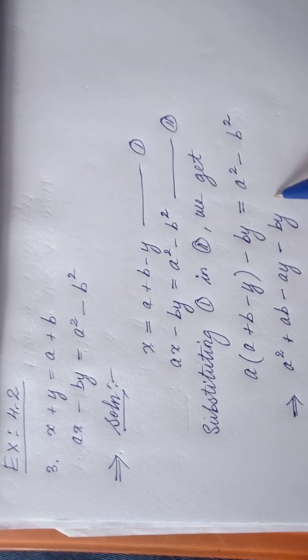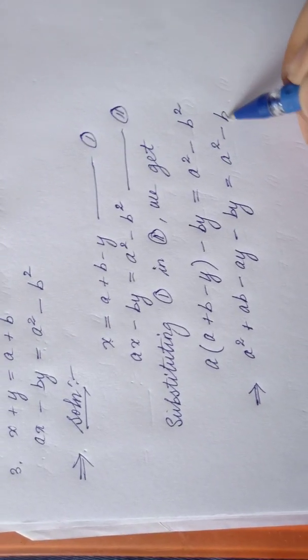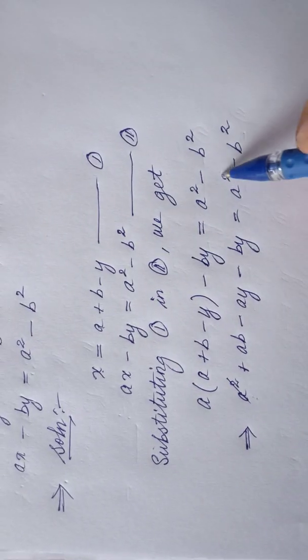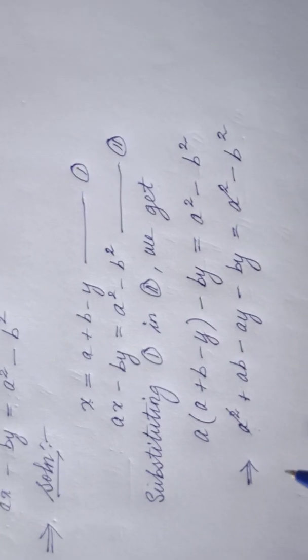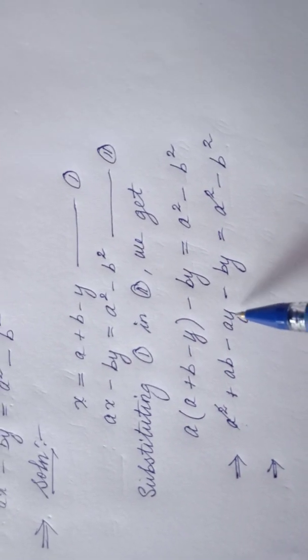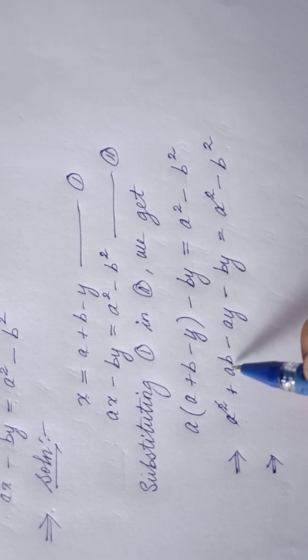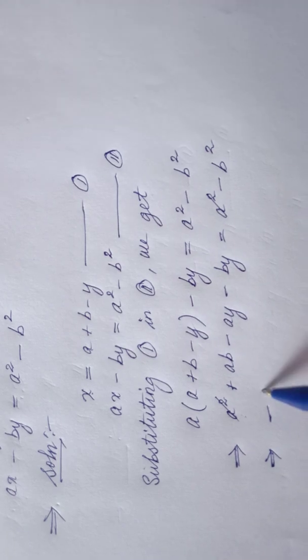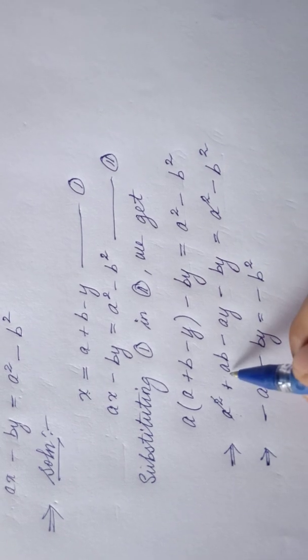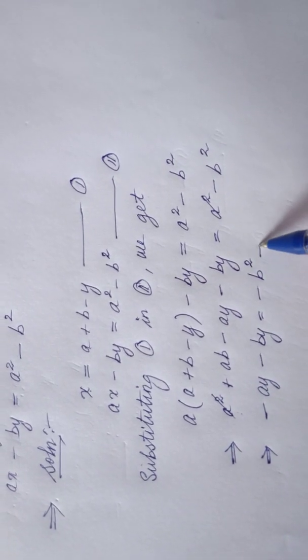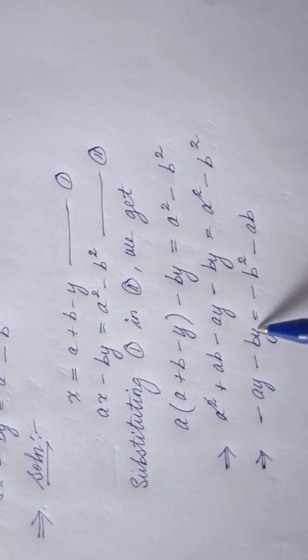Expanding: a into a is a squared, plus a into b is ab, minus ay, minus by, equal to a squared minus b squared. As you can see, we have a squared on the left-hand side and a squared on the right-hand side, so these two cancel each other. Moving the ay and by terms, we get: negative ay minus by equal to negative b squared minus ab.